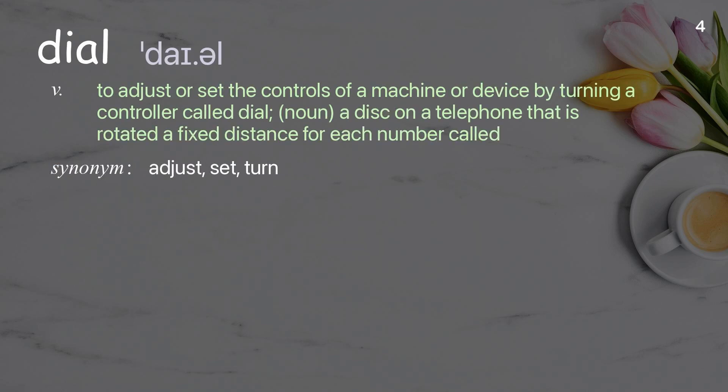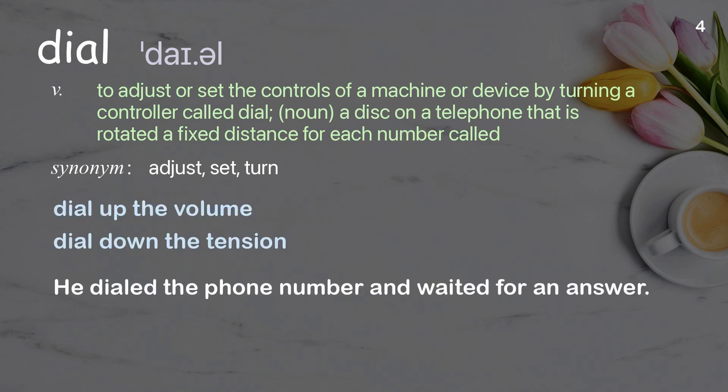Dial: To adjust or set the controls of a machine or device by turning a controller called a dial. Noun: A disc on a telephone that is rotated a fixed distance for each number called. Example: He dialed the phone number and waited for an answer.